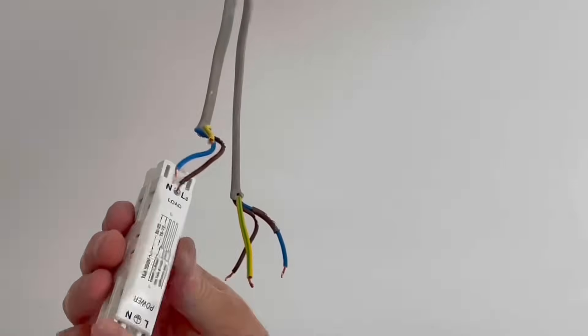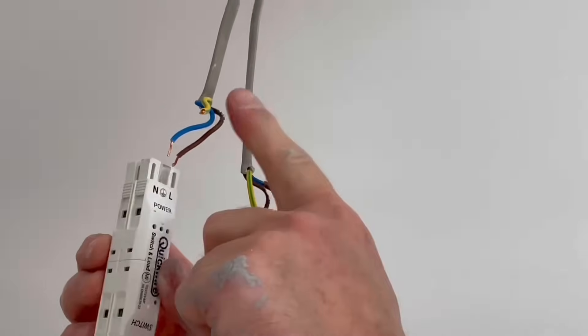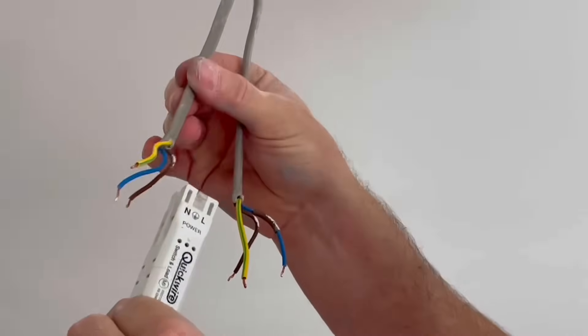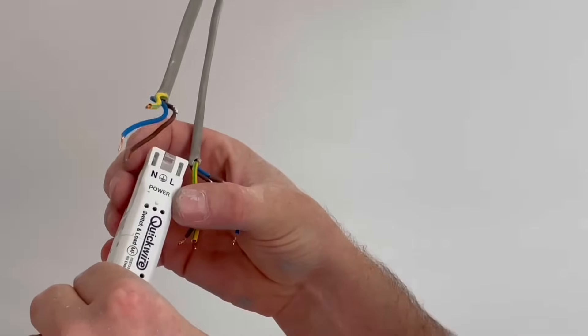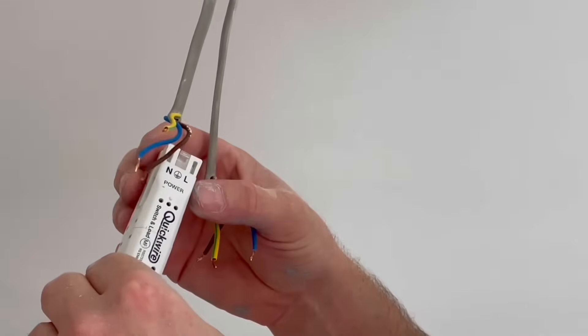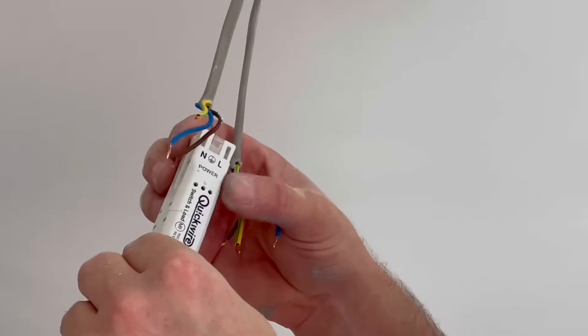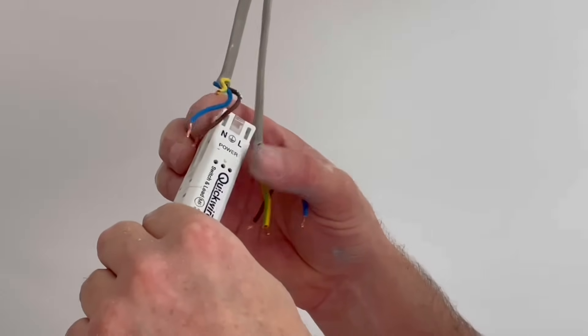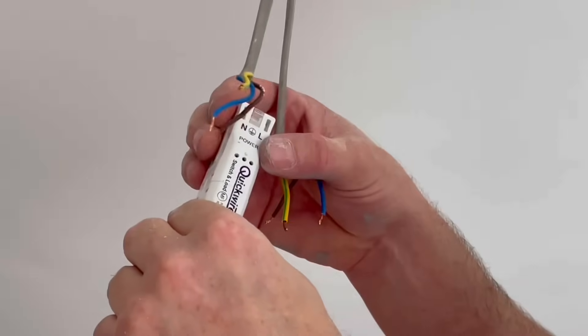So we're going to need to make our connections in the right part of this. If I'm going to do this one first which is our supply into the fitting, they've called it power and we need to strip this back and pop it into this QuickWire connector. We've seen these on the channel before how easy they are but I'll show you once again how to cut this back and just pop it into place.